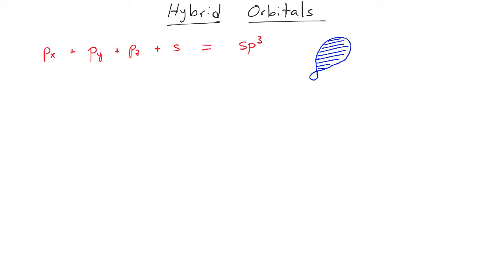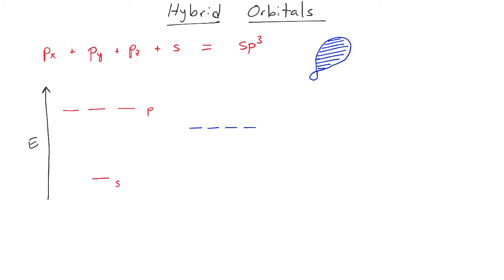This is called an sp3 hybrid orbital. When we look at the energy of these new orbitals, we know that the p orbitals are higher in energy than the s orbitals. The p orbitals are up here, and the s orbitals would have an energy that is slightly lower. When they come together to form the sp3 hybrid orbitals, the energy of those four orbitals is going to be in between the p and the s orbitals from which they were produced.